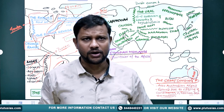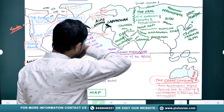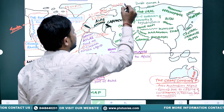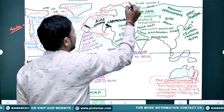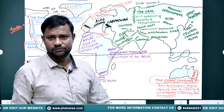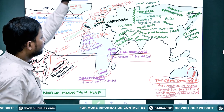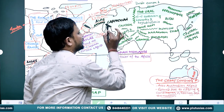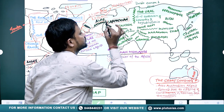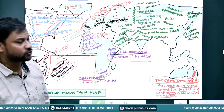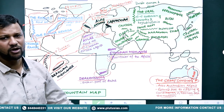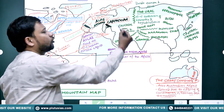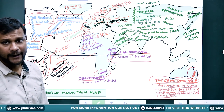Mount Matterhorn is the highest peak in the Alps. In Europe you will find three main ranges: Pyrenees, Alps, and then the Carpathian mountain range — these three are found in the European part.